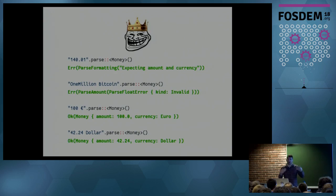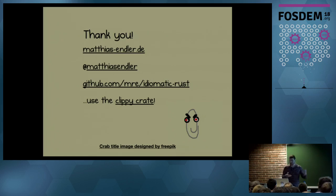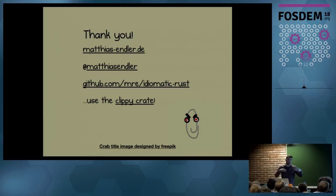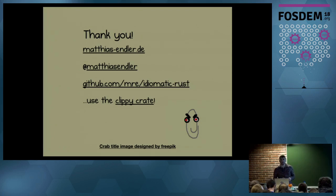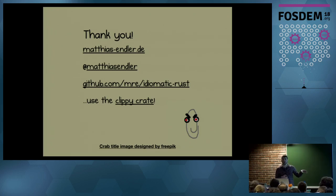So we took our initial code, modified it based on the compiler's feedback, and reached something that is readable, maintainable, and safe without doing much. Start with something, iterate, and the compiler will help you a lot. If you're interested in this kind of stuff, check out my website and ping me on Twitter. Please contribute to that list — maybe we can make it bigger. And if you want a guide, use the Clippy crate, which has many more lints to help you write more idiomatic code. Thank you.